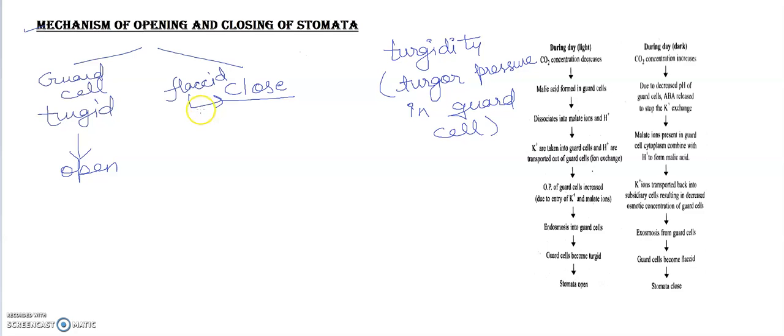And I think you all know in dicot and monocot, stomata, they have guard cells, different types of guard cells. In dicot it is bean shaped, kidney shaped you can say, and in monocot it is dumbbell shaped. So this is all about the shape of the guard cells. So this point is not too much important.